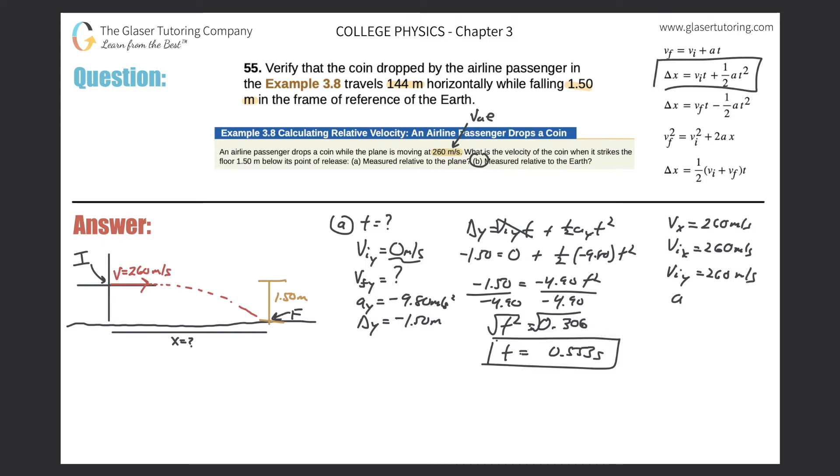Why is this the case? Why are they all the same? Because of this fact: the acceleration in the x frame is zero. Therefore the final is the same as the initial which is the same as basically just the average.